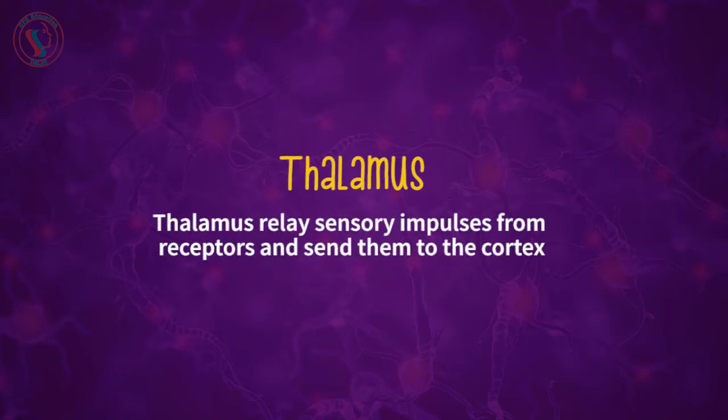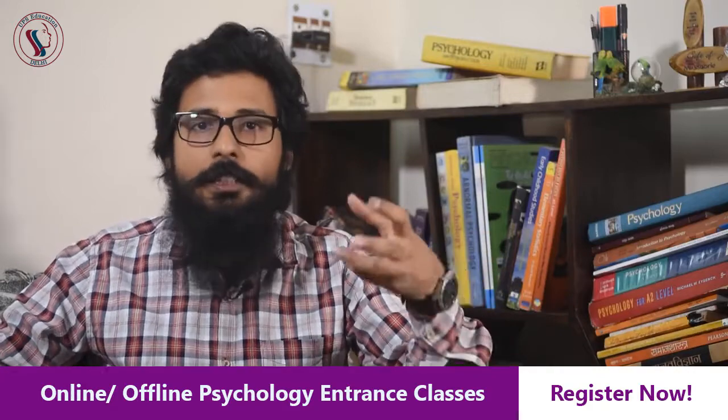The next part I want to discuss is the thalamus. The thalamus relays sensory impulses from receptors and sends them to the cortex. Sensory information travels from the body surface to the thalamus, which receives it as a sensation, and then that sensation is transferred to the cerebral cortex for interpretation — like touch, pain, or temperature. During most stages of sleep, the thalamus becomes quiet and does not send much information about the external world.